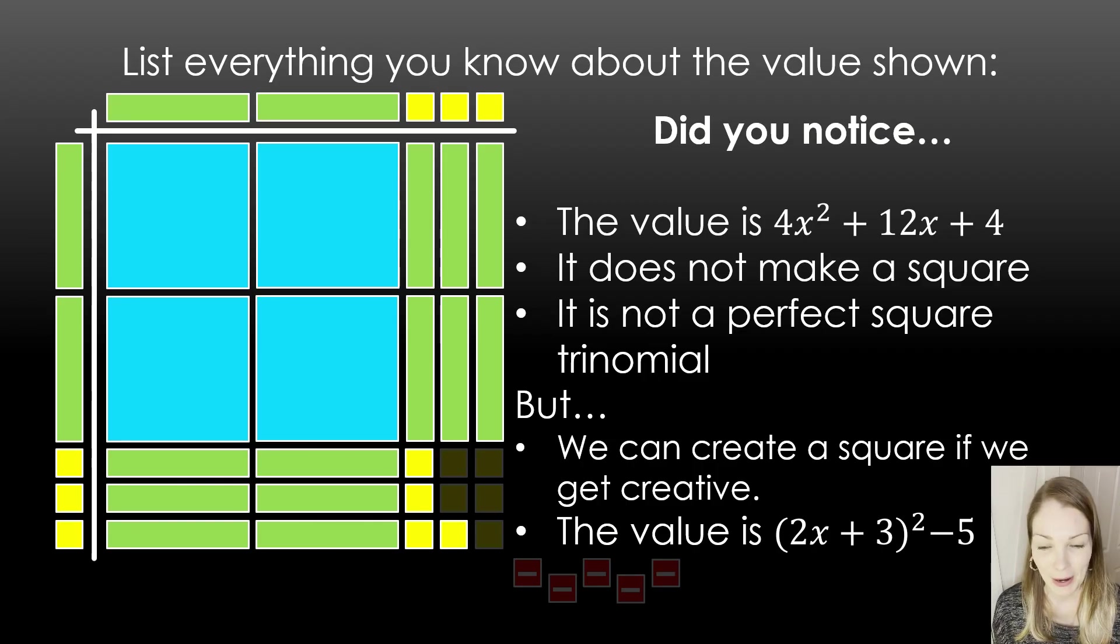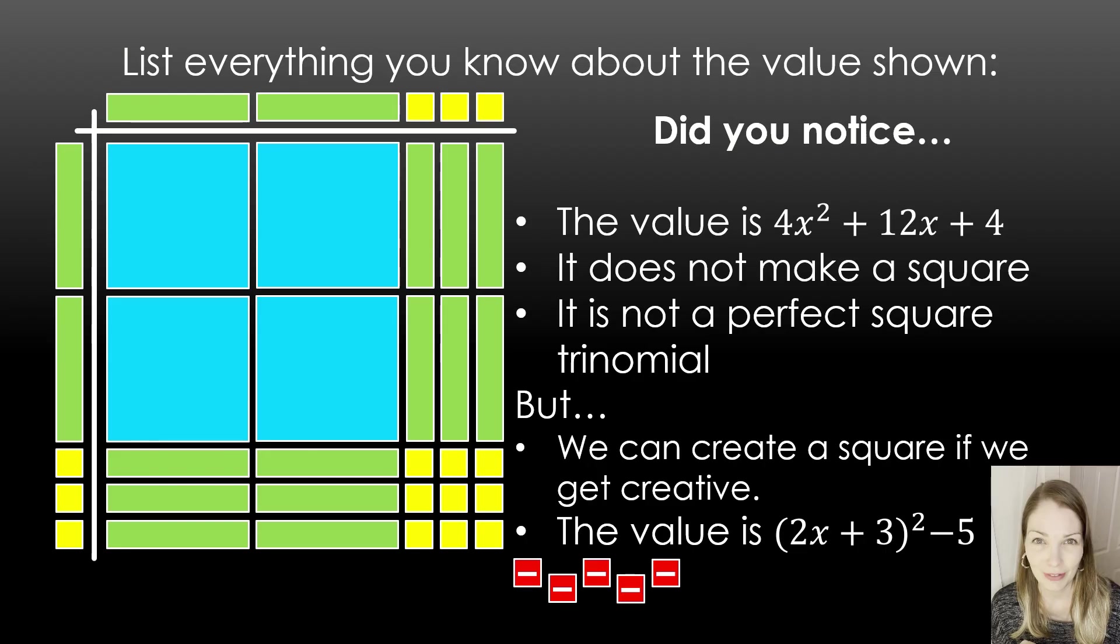If you tried to make a square, maybe you were missing 5 unit tiles down there. So if I want 5 more unit tiles, if I want my 5 so that I can make a square, then I also need a negative 5. That way I keep the same value. And that's where this idea of completing the square comes from.